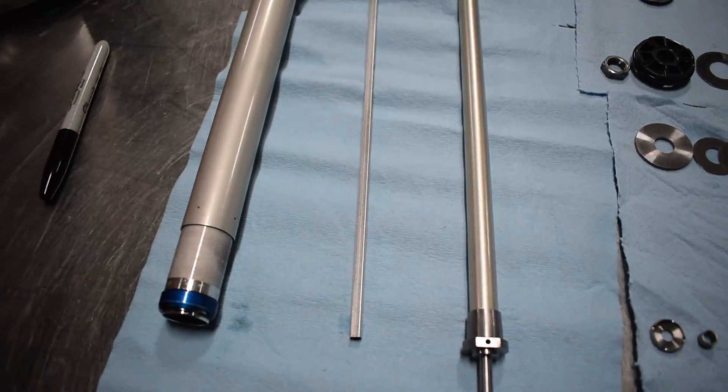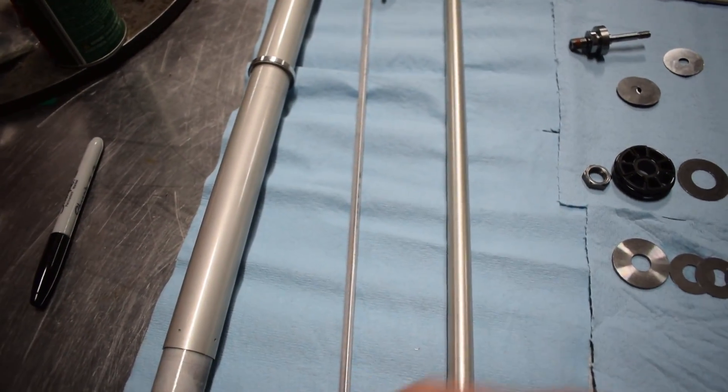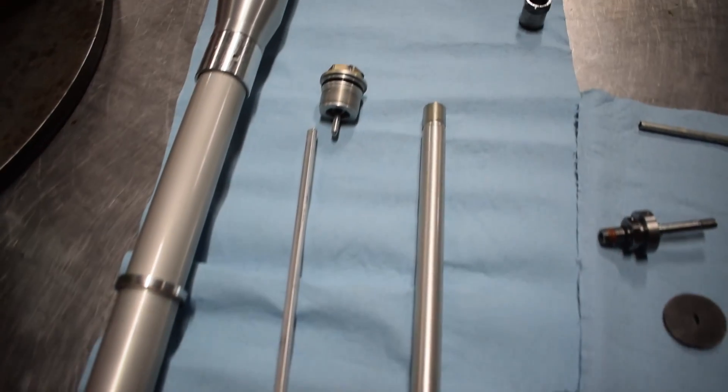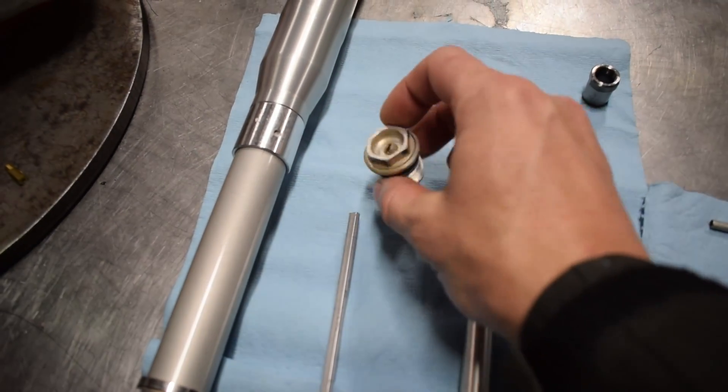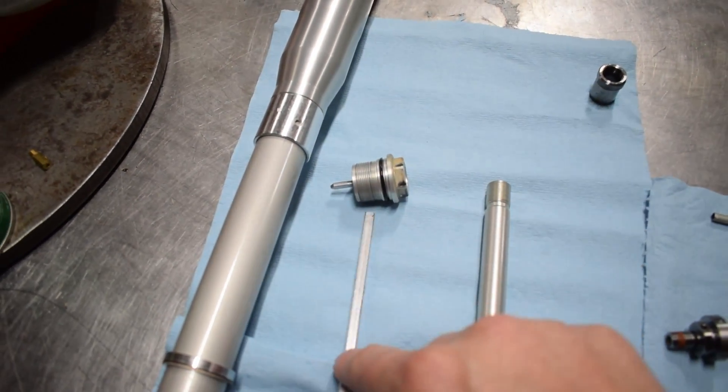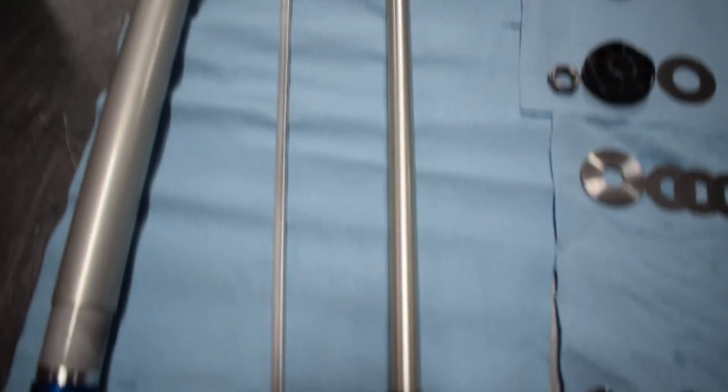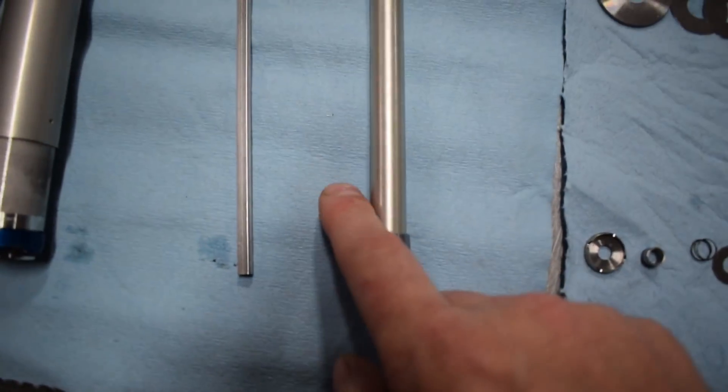This is the rebound adjusting rod, right here. What that does is get turned by your adjuster at the bottom of the bike. That turns this rod.